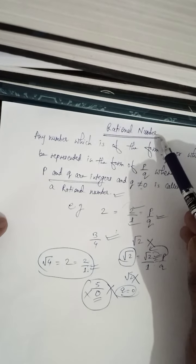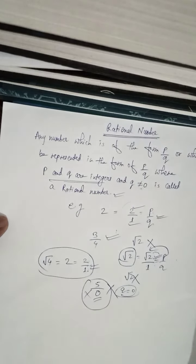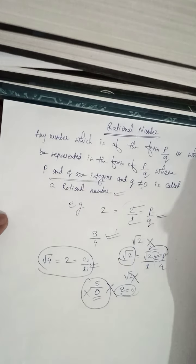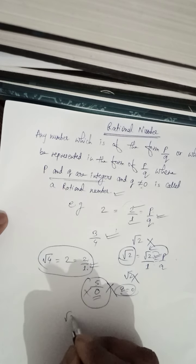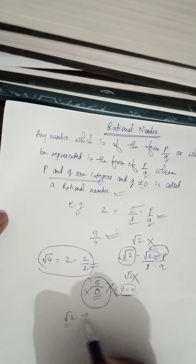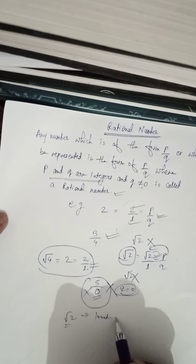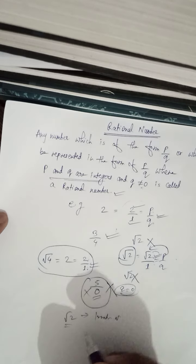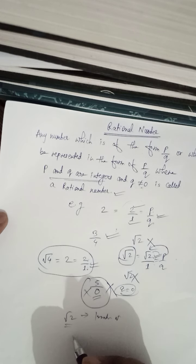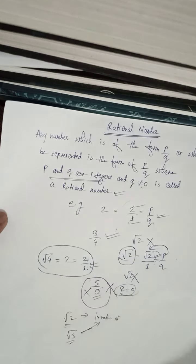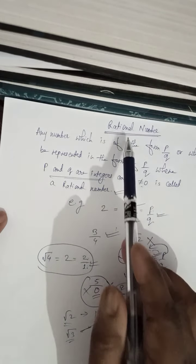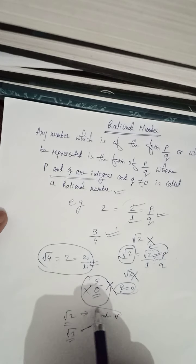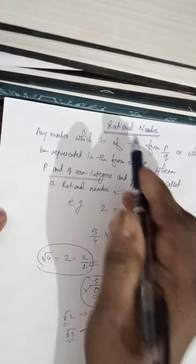If a number is not a rational number, it will be irrational. For example, √2 is not a rational number — it is an irrational number. √3 is also an irrational number. Those numbers which are not rational numbers are called irrational numbers.